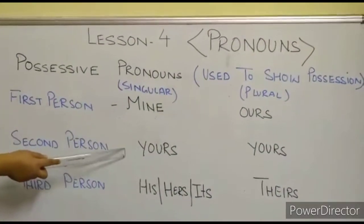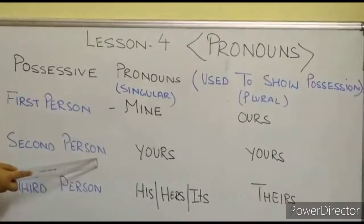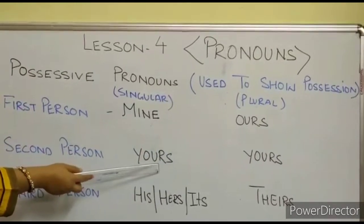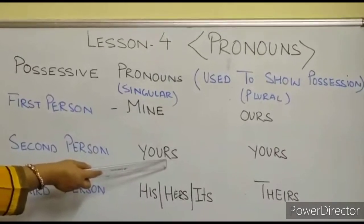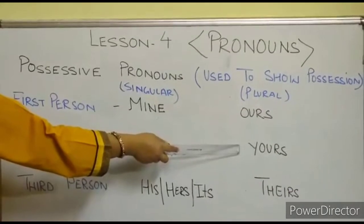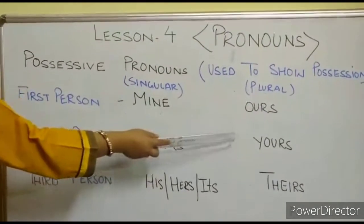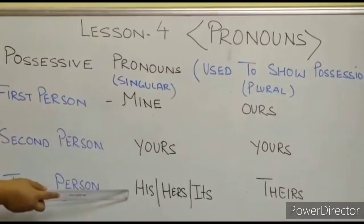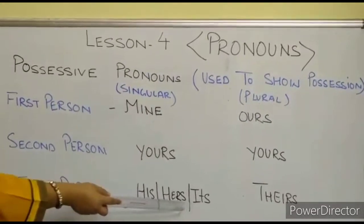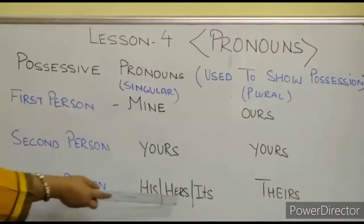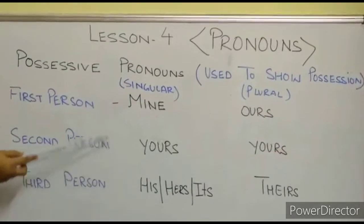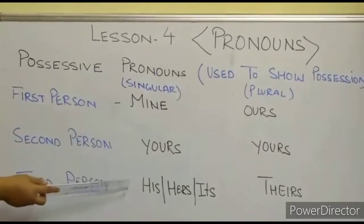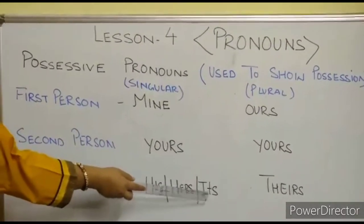For second person, both singular and plural, we use 'yours' — 'This dress is yours' or 'These dresses are yours.' For third person singular, we use 'his,' 'hers,' and 'its' — note that S is already present. For third person plural, we use 'theirs.' Examples: 'This dress is his,' 'This bag is hers.'